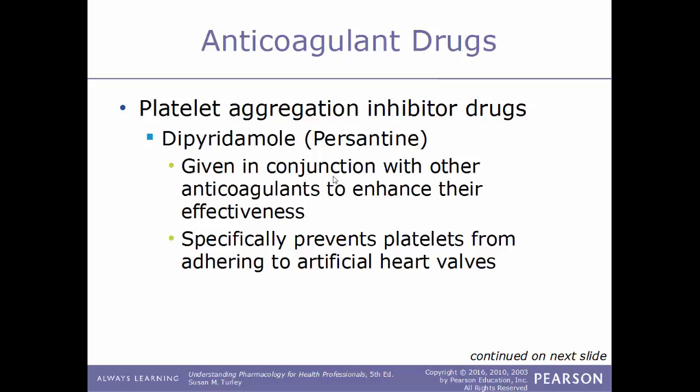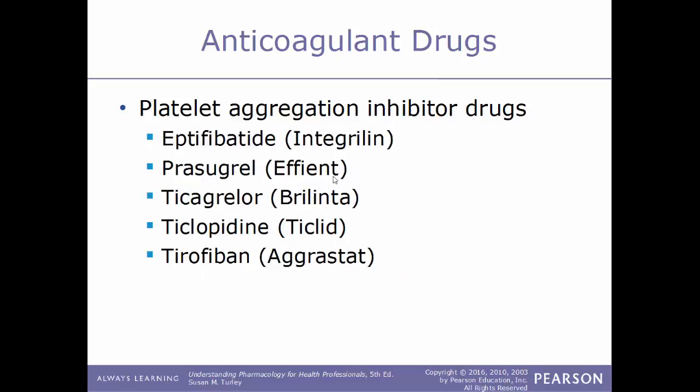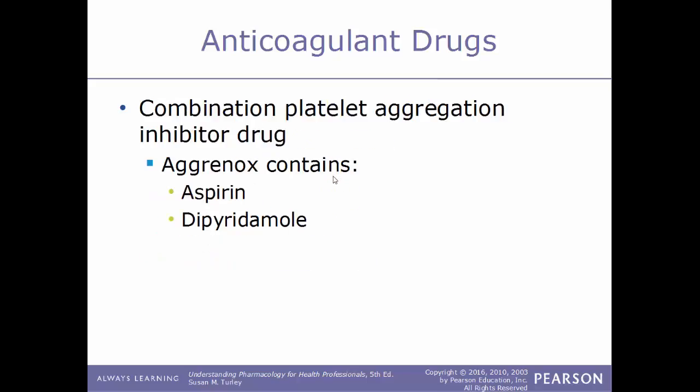Intermittent claudication is pain usually found in the legs caused by too little blood flow, typically worsened by exercise. Dipyridamole, sold under the trade name Persantine, is given in conjunction with other anticoagulants to enhance their effectiveness and specifically prevents platelets from adhering to artificial heart valves. Other examples include abciximab (trade name ReoPro), generic aspirin (trade names Bayer, Ecotrin), clopidogrel (Plavix), eptifibatide (Integrilin), prasugrel (Effient), ticagrelor (Brilinta), ticlopidine (Ticlid), and tirofiban (Aggrastat).